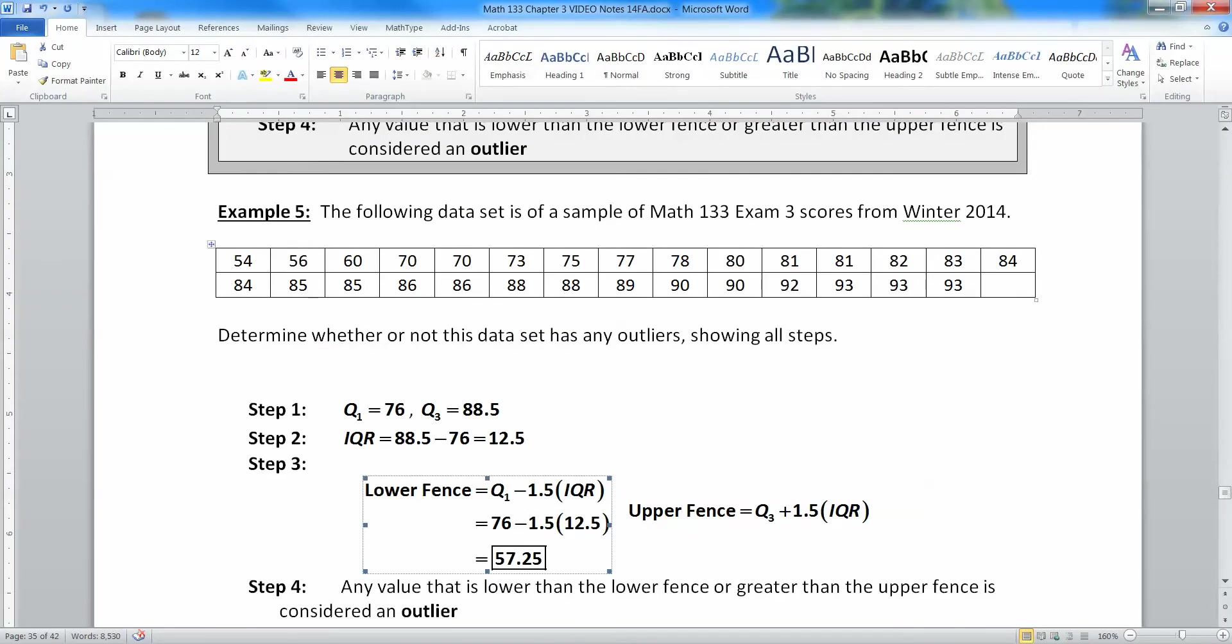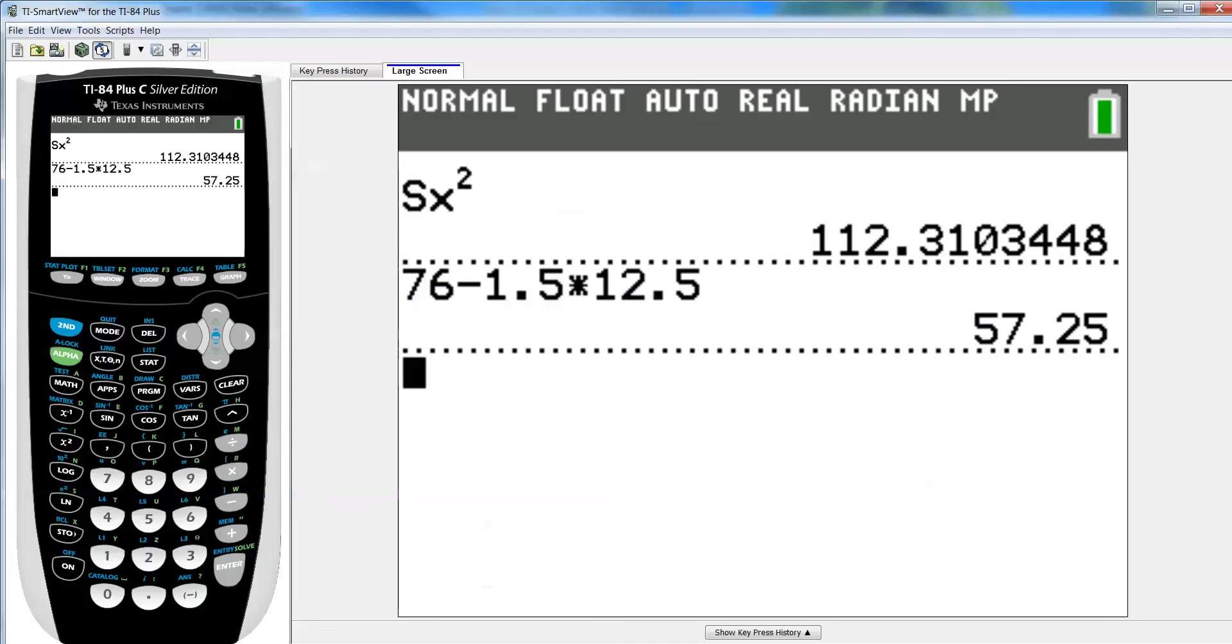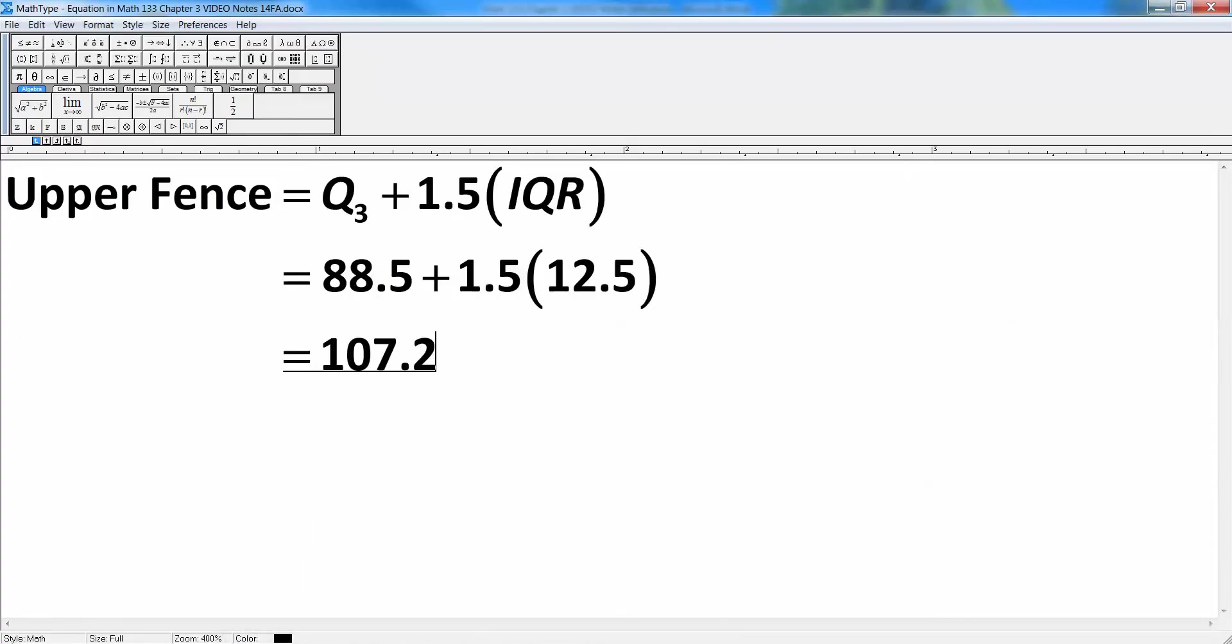Then on the upper side, we have Q3 plus 1.5 IQR. So that would be equal to 88.5 plus 1.5 times 12.5, which would be 88.5 plus 1.5 times 12.5, 107.25. All right. So there's our upper fence.